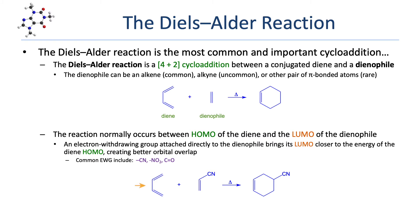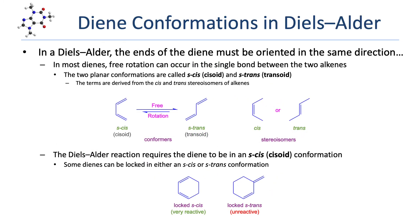Shown here is a more typical example of a Diels-Alder reaction that includes an electron-withdrawing group on the dienophile, producing a substituted cyclohexene. In order for a Diels-Alder reaction to succeed, the two ends of the diene must be oriented in the same direction. In most dienes, simple free rotation along the single bond between the two alkenes allows for interchange between two distinct planar conformations. The Diels-Alder reaction requires the diene to be in an S-cis or cisoid conformation for its HOMO to overlap correctly with the dienophile LUMO.